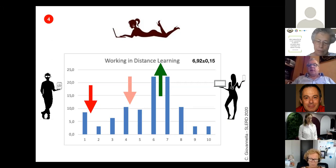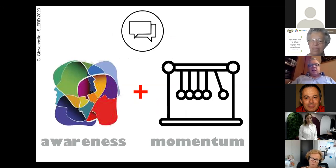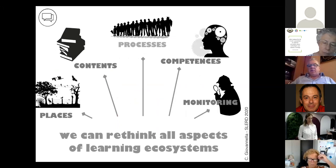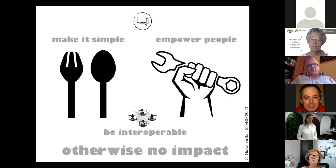The final message that I would like to provide you is that this tragedy, this lockdown, nevertheless has produced an increase of awareness and momentum that is there. This means that this gives you the opportunity really to rethink all aspects of learning ecosystems—places, content, processes, competencies, and monitoring. I know that this is very difficult because a lot of people do not agree at all, but nevertheless we should try to take this opportunity. The recommendation is to think simple and try to empower people and make things interoperable.